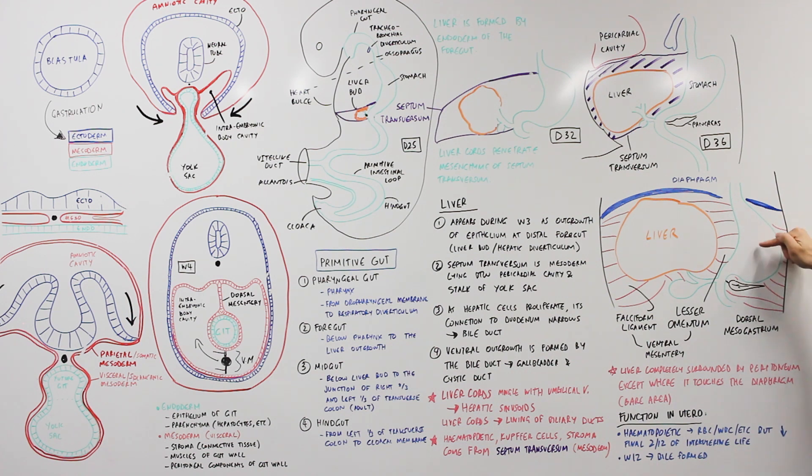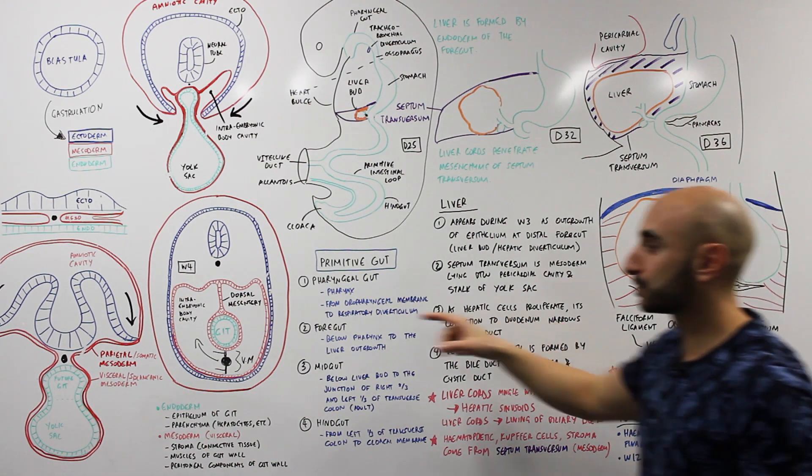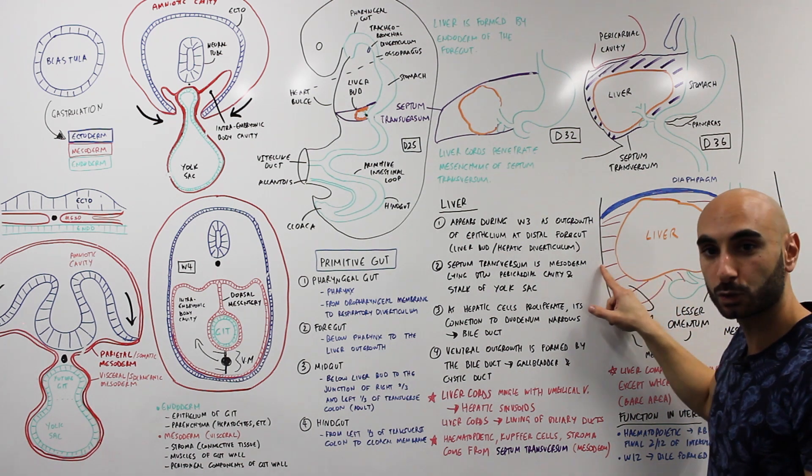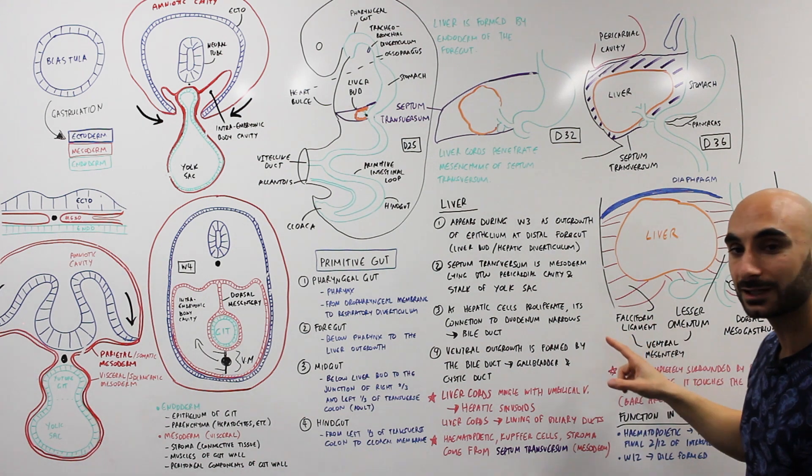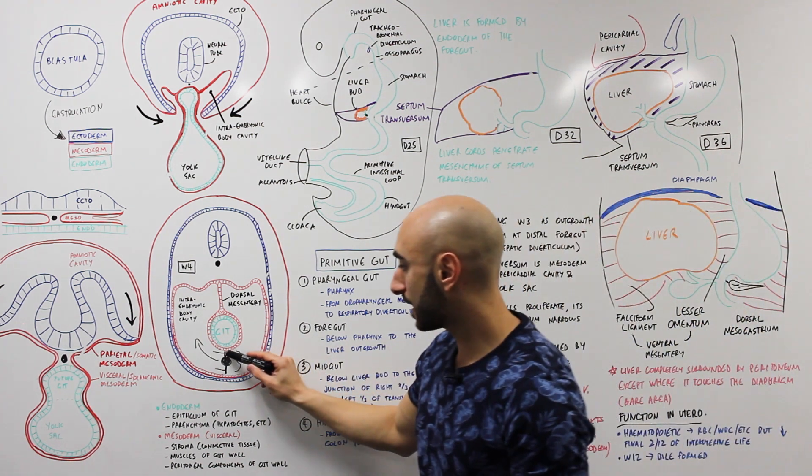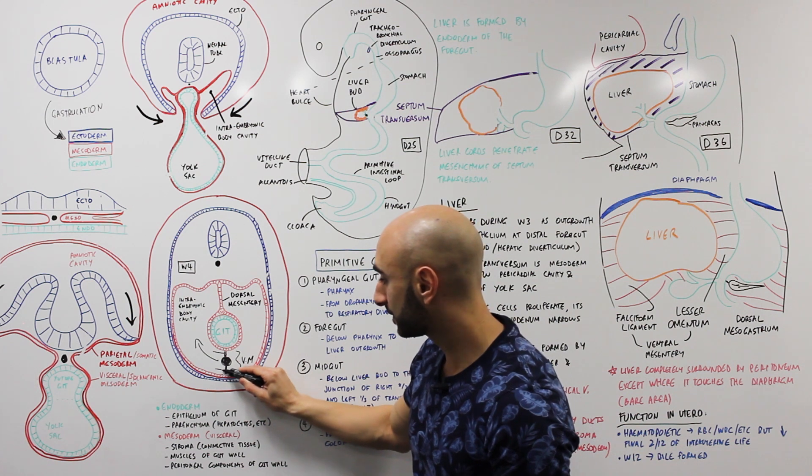So looking at it here, in red connecting the stomach to the back wall, this is actually the dorsal mesogastrium or the dorsal mesentery. Here connecting the liver to the stomach and duodenum is the lesser omentum, and connecting the liver to the ventral wall is the falciform ligament. The falciform ligament and lesser omentum are from ventral mesentery.